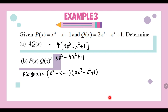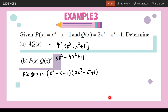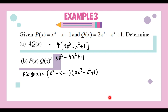When we are dealing with multiplication, we must make sure every term in P(x) multiplies every term in Q(x). Starting with the first term, x², we multiply x² with every term in Q(x): x² times 2x³ gives 2x⁵, followed by -x⁴, followed by +x².